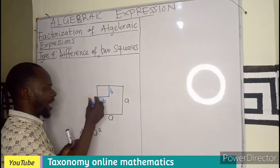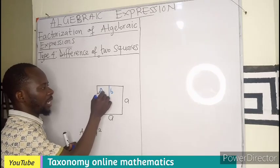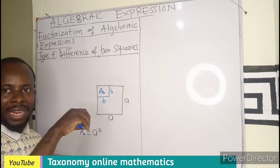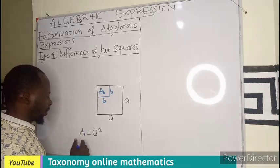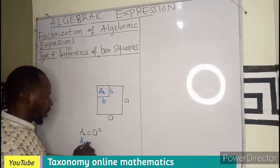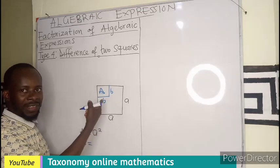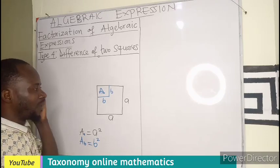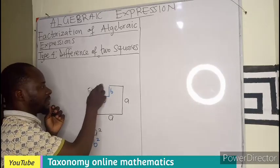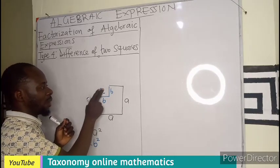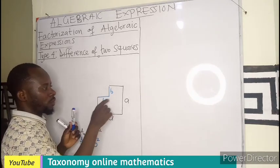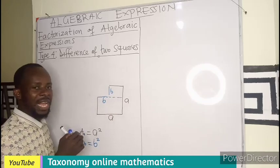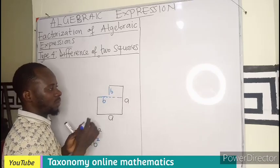If I'm looking for the area of the small square that is being taken out, obviously the area of the small square is going to be length times length, which is going to be B squared. Now we have taken out this. So if I want to reconstruct this to resemble a two-dimensional figure, we know that this is what I'll get.